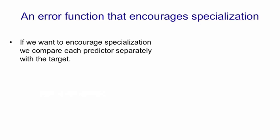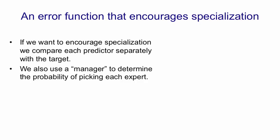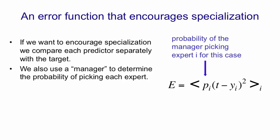So here's an error function that encourages specialization. And it's not very different. To encourage specialization, we compare the output of each model with the target separately. We also need to use a manager to determine the weight we put on each of these models, which we can think of as the probability of picking each model if we had to pick one. So now, our error is the expectation over all the different models of the squared error made by that model times the probability of picking that model, where the manager or gating network is determining that probability by looking at the input for this particular case. What will happen if you try and minimize this error is that most of the experts will end up ignoring most of the targets. Each expert will only deal with a small subset of the training cases, and it will learn to do very well on that small subset.